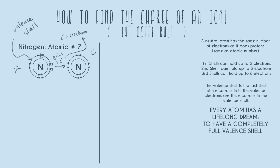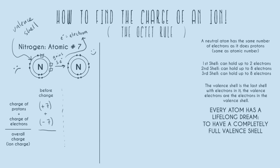Now let's get into the charges of these nitrogen atoms before and after they got a full valence shell. The overall charge, which is the same as the ion charge, is determined by adding the charge of the protons plus the charge of the electrons. Before nitrogen got its three extra electrons, the charge from protons was plus seven — that's just the atomic number, always how many positive charges nitrogen will have. With seven electrons, the charge from electrons was negative seven. So positive seven plus negative seven equals zero — a neutral atom.